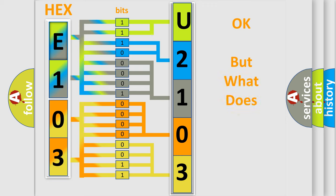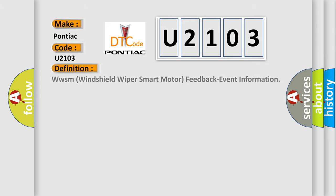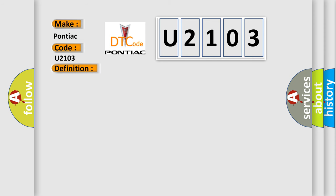We now know in what way the diagnostic tool translates the received information into a more comprehensible format. The number itself does not make sense if we cannot assign information about what it actually expresses. So, what does the diagnostic trouble code U2103 interpret specifically for Pontiac car manufacturers? The basic definition is: WWSM — Windshield Wiper Smart Motor — Feedback Event Information.